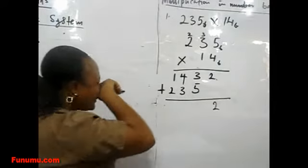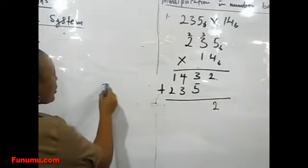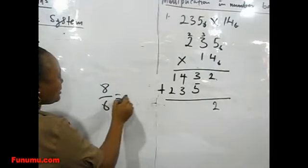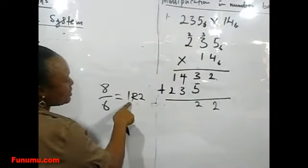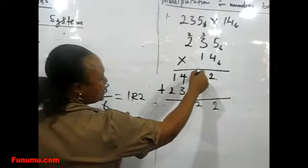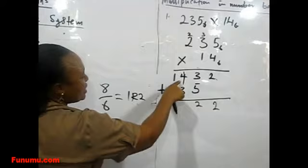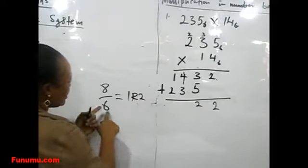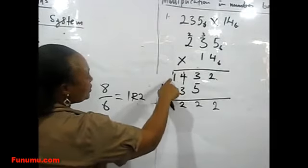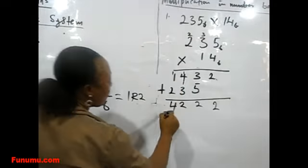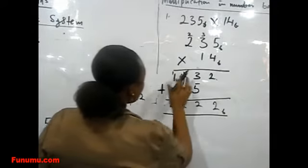5 plus 3 is 8. So we go and divide 8 by the base, which is 1 remainder 2. So we put down the 2 and carry 1. Now 4 plus 1 is 5, which is also 1 remainder 2. We write 2, carry 1. 1 plus 1 is 2, plus 3 is 4. So we have 4223 in base 6.